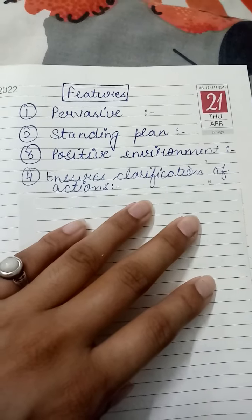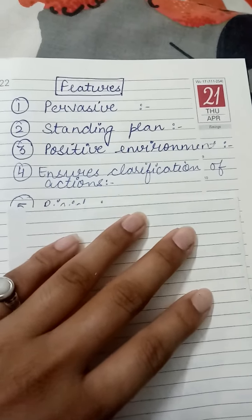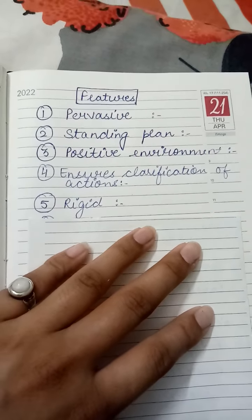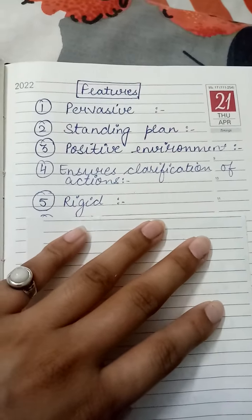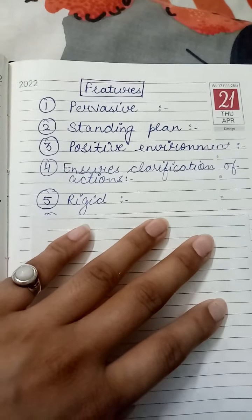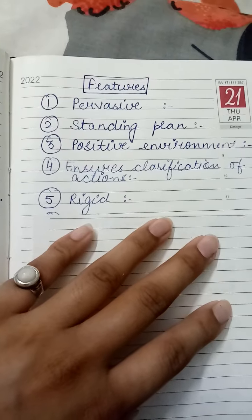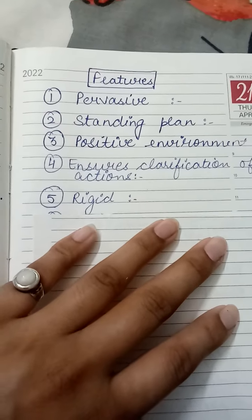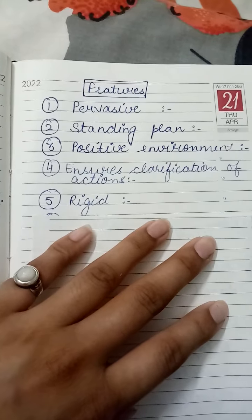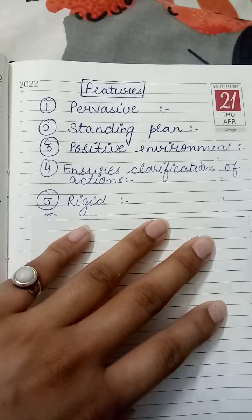Next we have rigid rules. Rules, when they are made, are made to the greatest extent correctly, so frequent changes are not possible. For example, if you have made a no smoking rule, what do you need to change in this rule? This rule is a rigid rule.